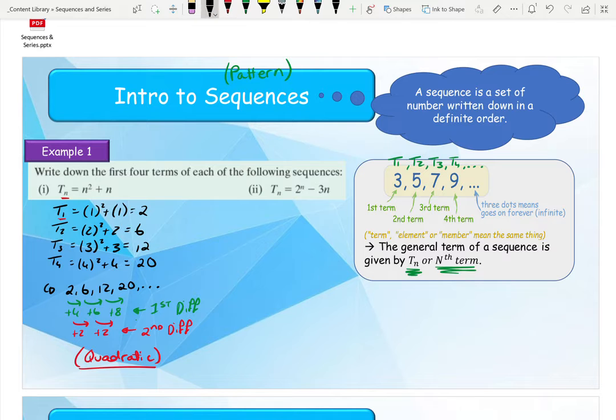But flying through part 2 of our example here again, I'm going to find the first 4 by just subbing in 1, 2, 3 and 4 to get our terms.